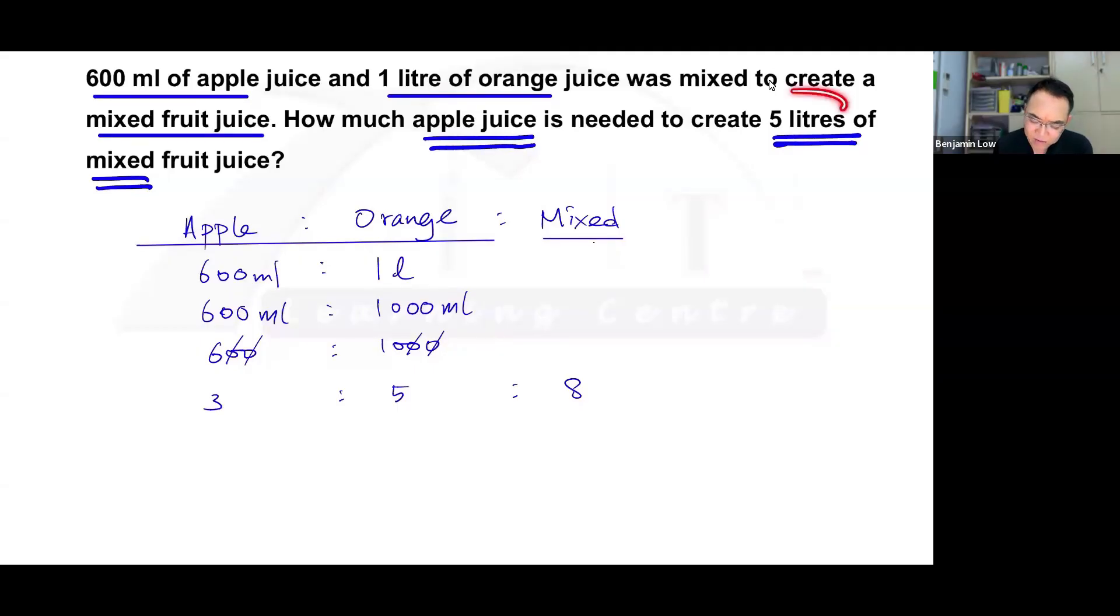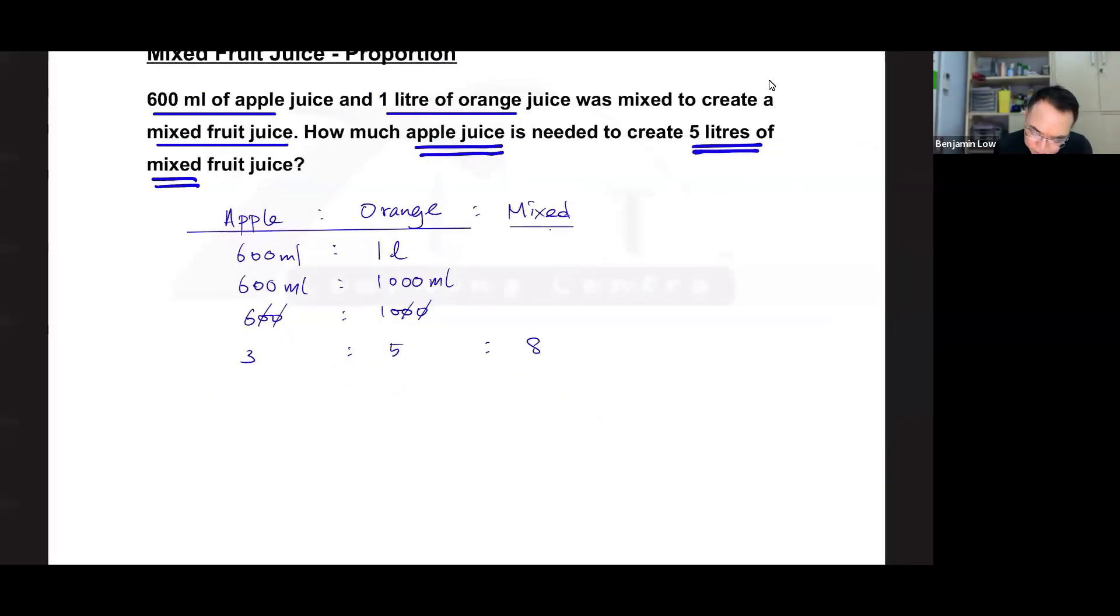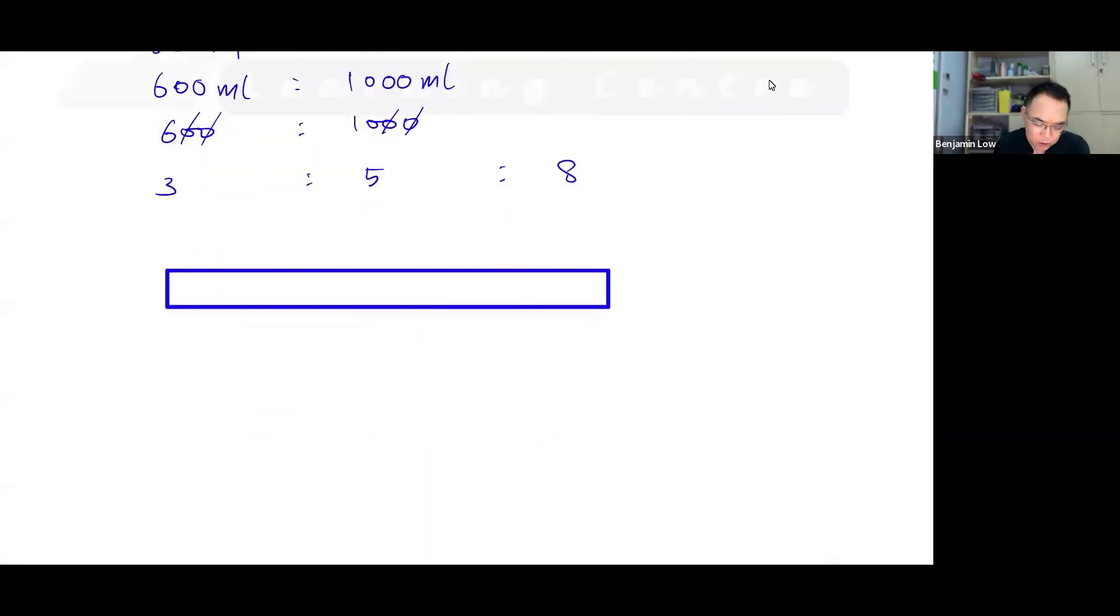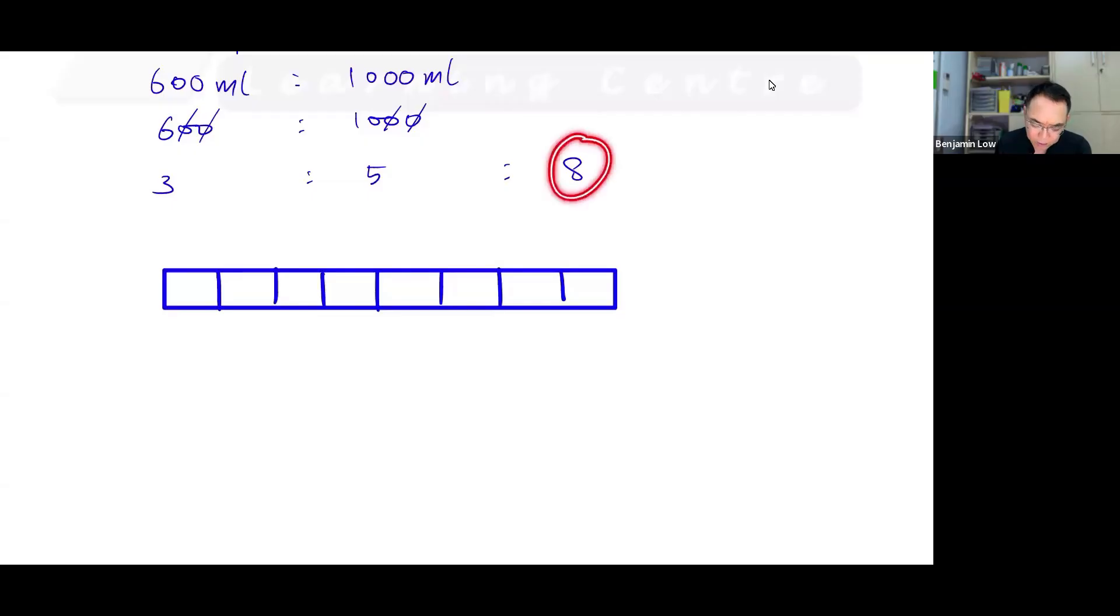Next, it says that they need to create 5 liters of mixed fruit juice, which means that this represents the 5 liters. If we were to draw this out as a simple model, this represents the mixed fruit juice because I'm about to cut this into 8 parts. The 8 here represents 8 units, and this 8 units is the mixed fruit juice which will add up to 5 liters.